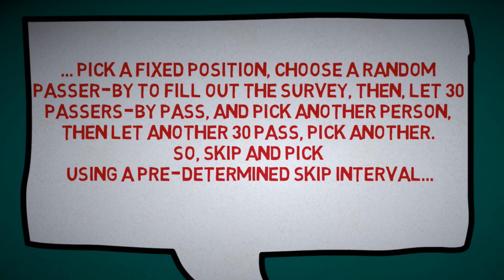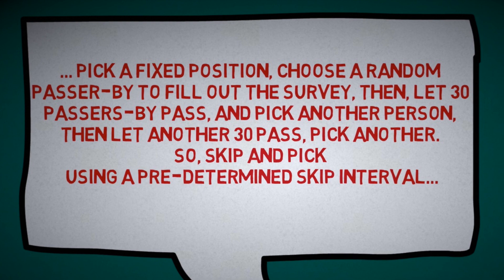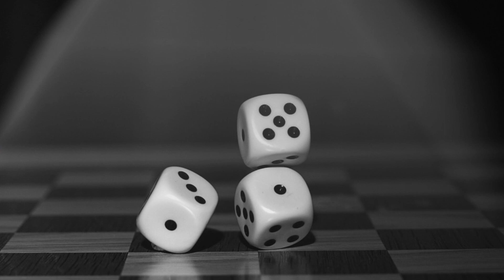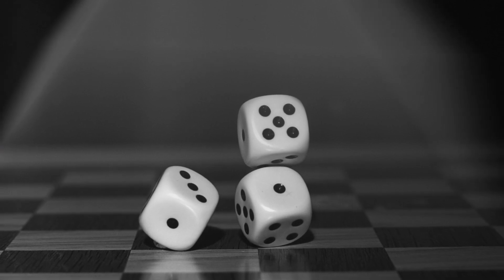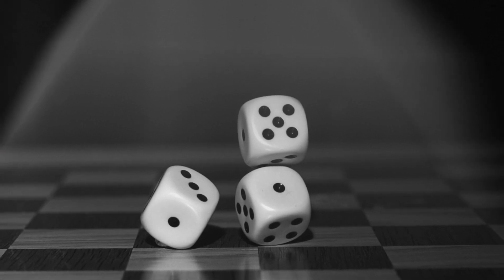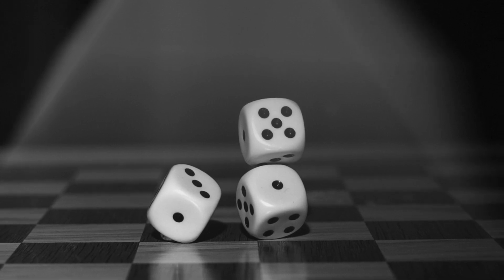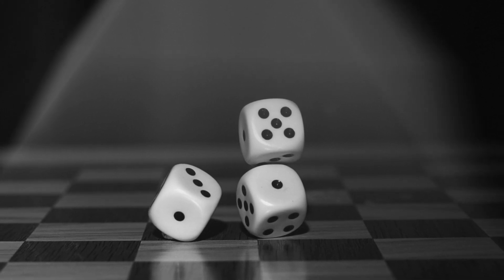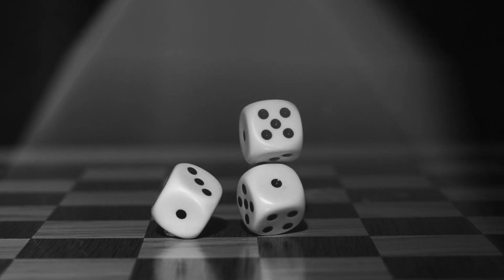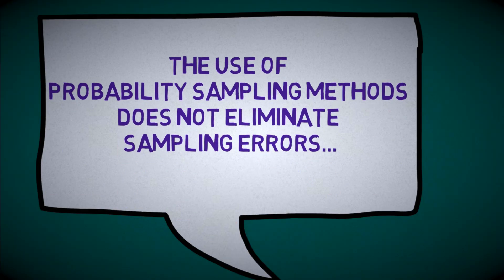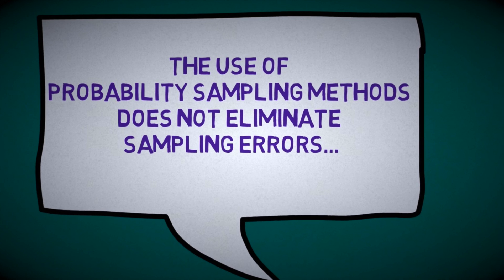But some would say, just because I use this skip interval and pick a person based on this procedure, that doesn't mean I get a truly probability-based representative sample, because the person whom I do pick can still decline to participate, or that person might fill out the survey improperly, resulting in the survey being unusable. So I would still have a sampling error.